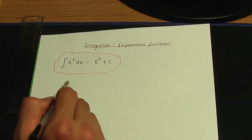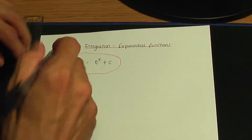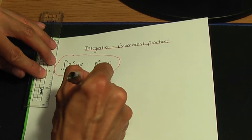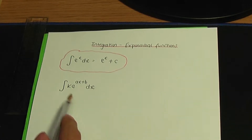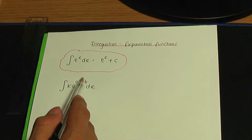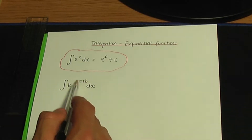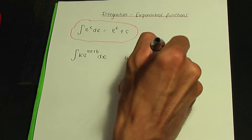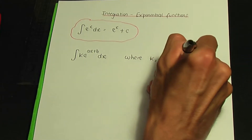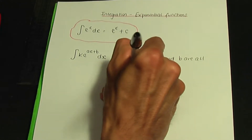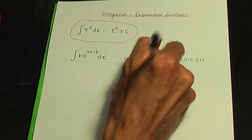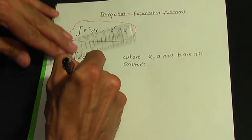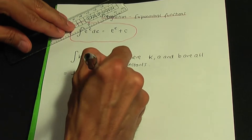Let me give you a related standard result. So if you integrate k·e to the power of ax plus b with respect to x — where k, a, and b are all constants and the power is of the form ax plus b, so the power is linear — then the result is k over a, e to the power ax plus b, plus c.